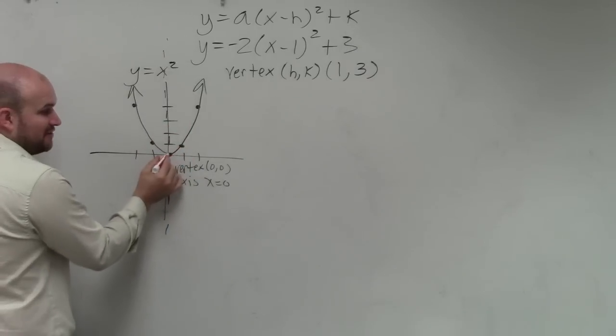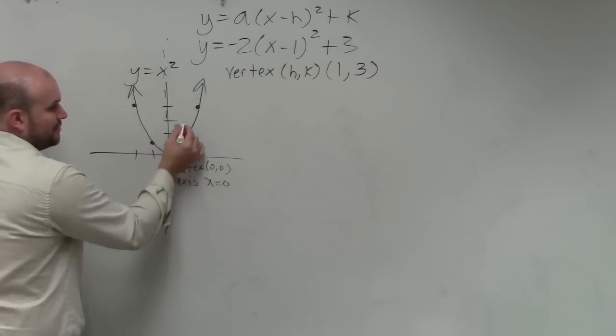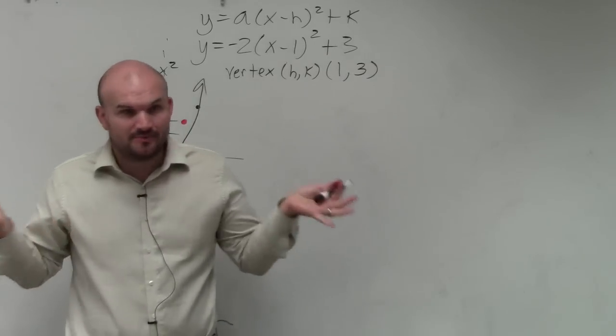So I'm going to basically take my vertex, which is here, and go over 1, and then up 3. 1, 2, 3. And make a nice big dot. That is my new vertex. Does everybody follow me with that?